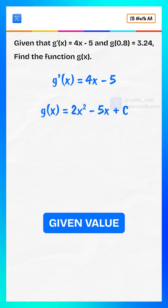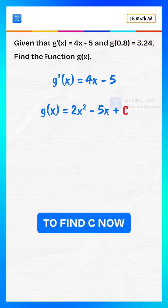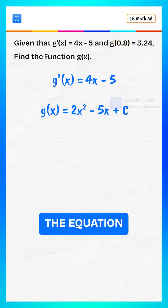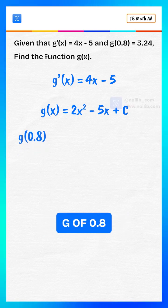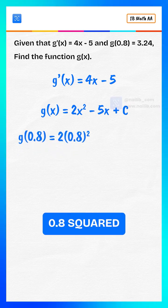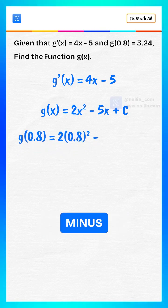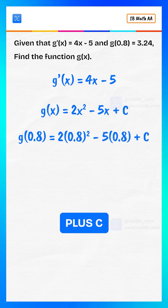Use the given value g of 0.8 equals 3.24 to find c. Now substitute into the equation: g of 0.8 equals 2 times 0.8 squared minus 5 times 0.8 plus c.